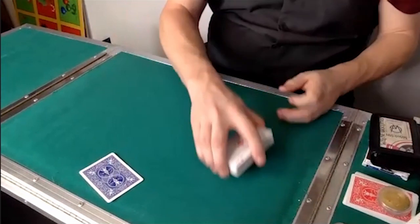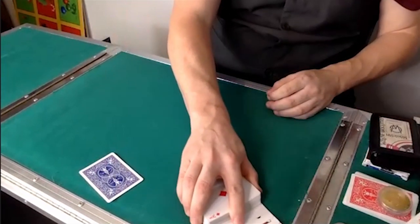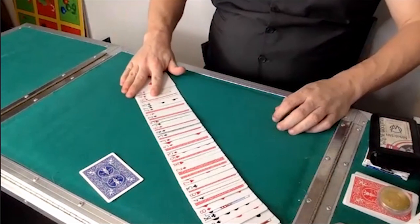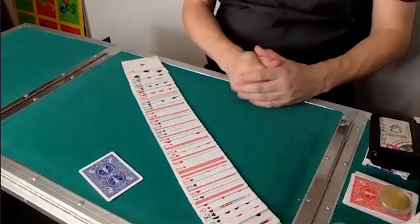However, if I take the cards and turn them over and spread through them, as I spread through now, you might notice that those cards that are faced down have become red back cards.